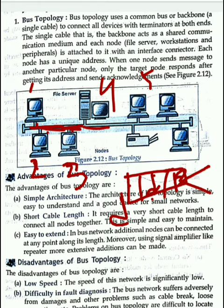Every computer is checking the data — which data it can get. Whoever has the matching address will take the data. After receiving, the receiver will send an acknowledgement. Acknowledgement means a confirmation — like getting a receipt slip.